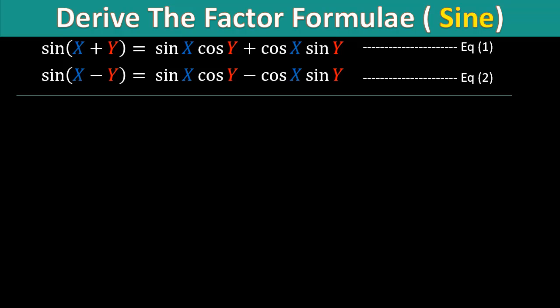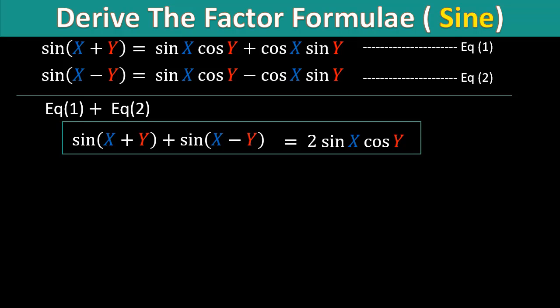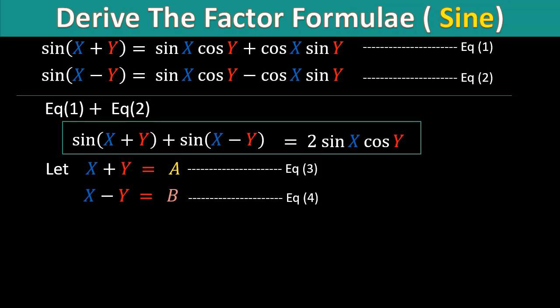We add equation 1 and equation 2. We will have sine of (x+y) plus sine of (x−y) on the left-hand side, and on the right-hand side we will have 2 sine x multiplied by cosine y. We let x+y equal to a and x−y equal to b.